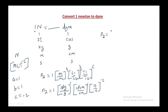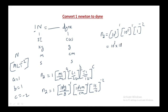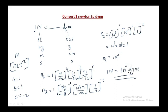Calculating: n2 = 1 · (10³)^1 · (10²)^1 · (1)^−2 = 10³ · 10² · 1 = 10⁵. Therefore, 1 newton = 10⁵ dyne. This is the way to convert one system of unit into another system of unit.